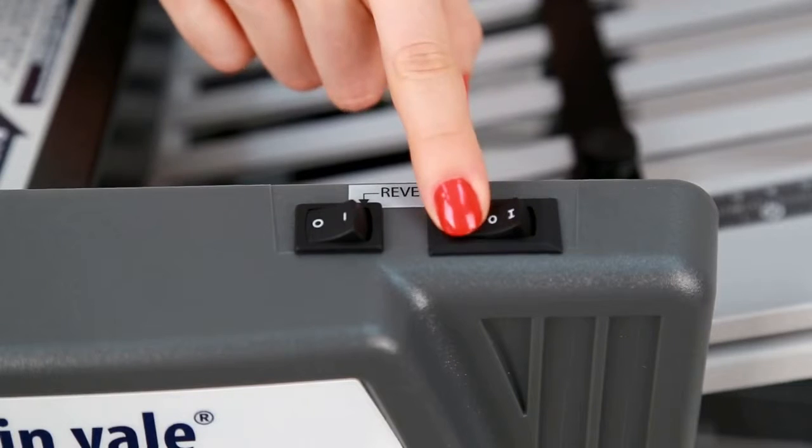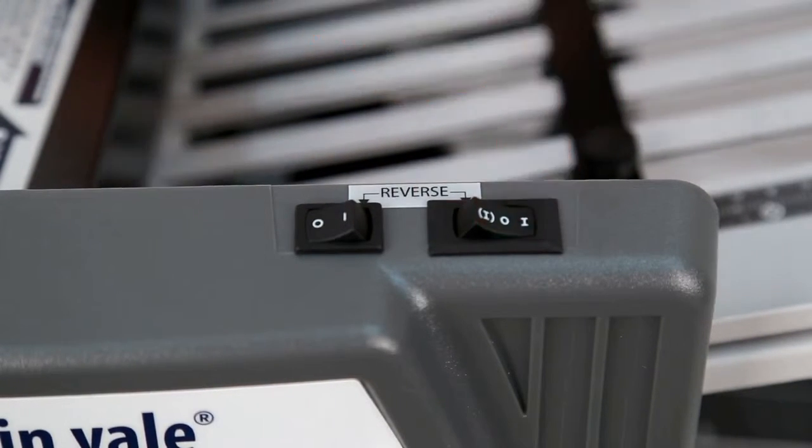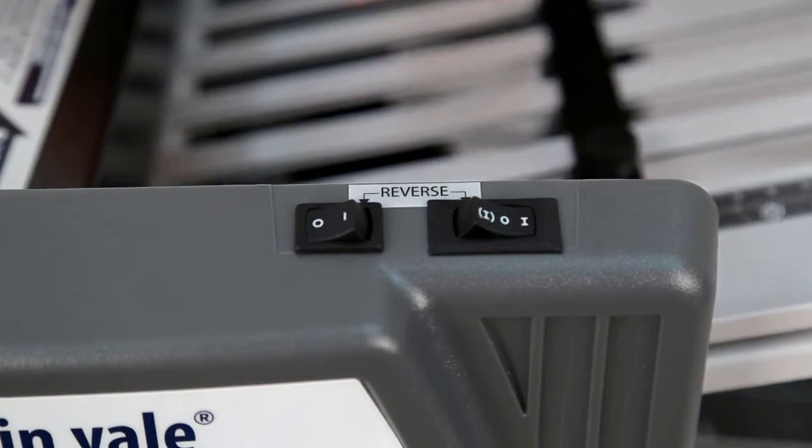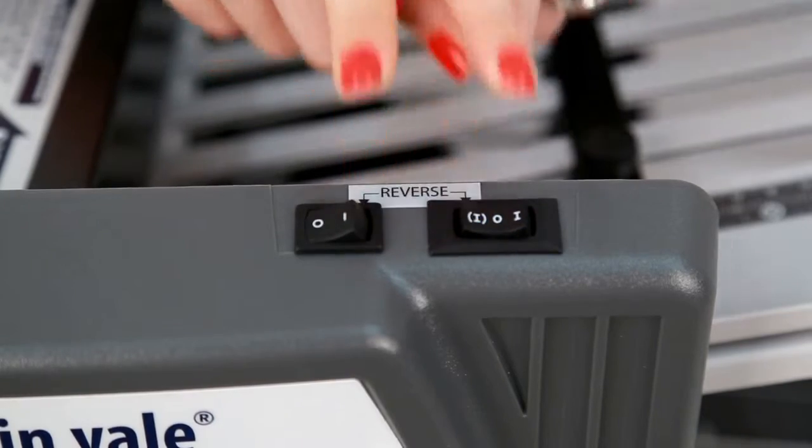Finally, turn on the machine by pressing the rocker switch for momentary or continuous operation. For reverse operation, press and hold both rocker switches where indicated on the machine.